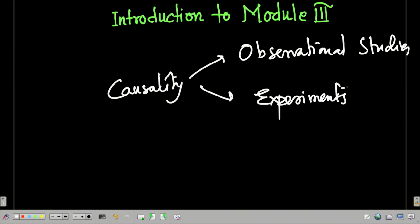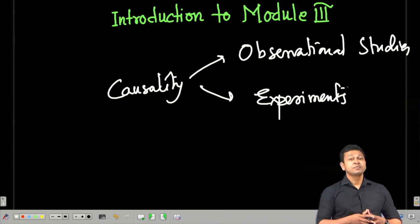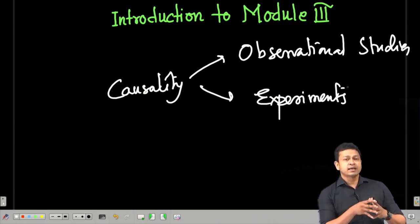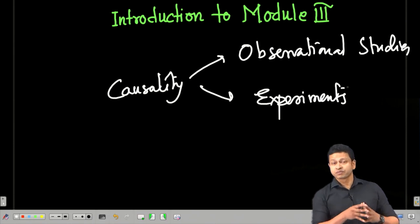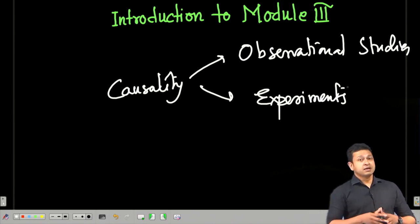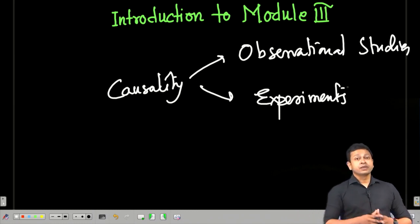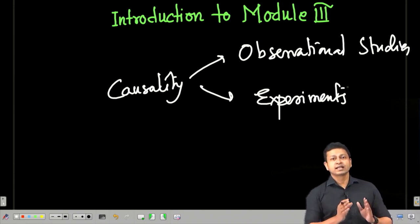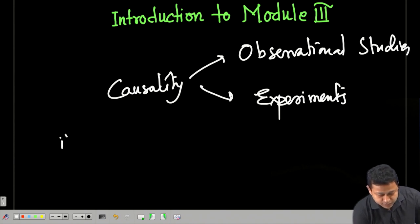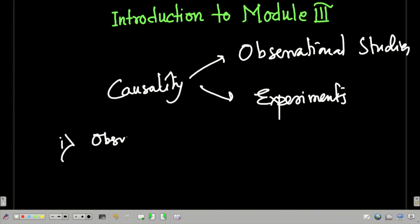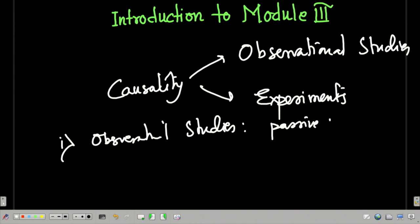How are these two concepts different? In observational studies, data is collected by a third party or the researcher themselves, but essentially you do not do anything actively — you basically passively collect data. You go to the field, ask some questions, collect data, and observational studies are essentially passive data collection.